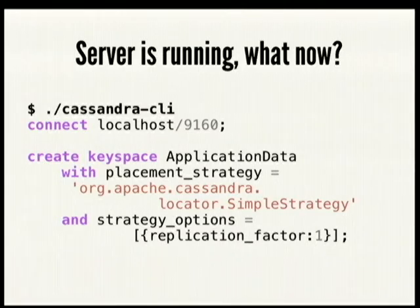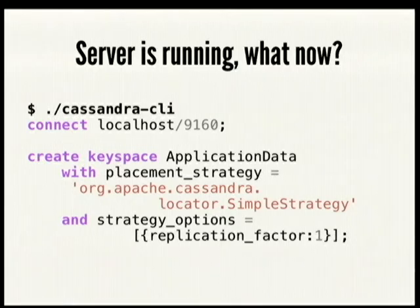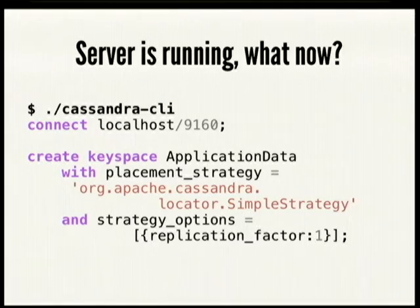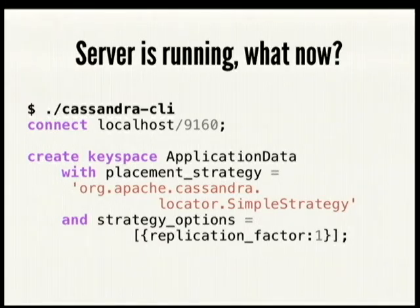The default strategy takes your ring of machines, chops them into equal-space chunks, and sticks data across those different locations. There are network-aware strategies that know about data centers and can ensure one copy goes into data center one and two into data center two. With the simple strategy you just tell it how many machines you want a piece of data on. For more complex strategies, you can say one piece of data over here, two over there, three in the third place — however you want.